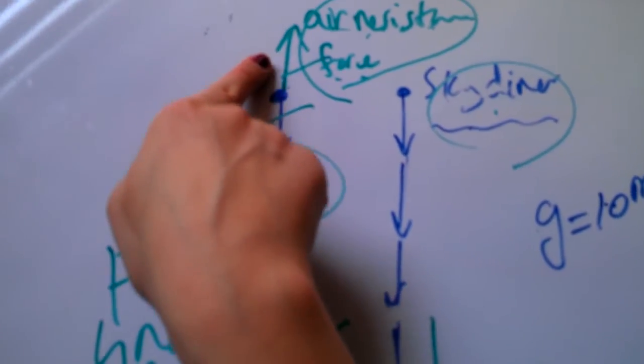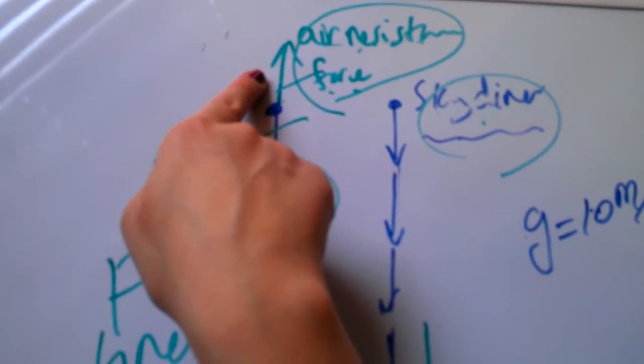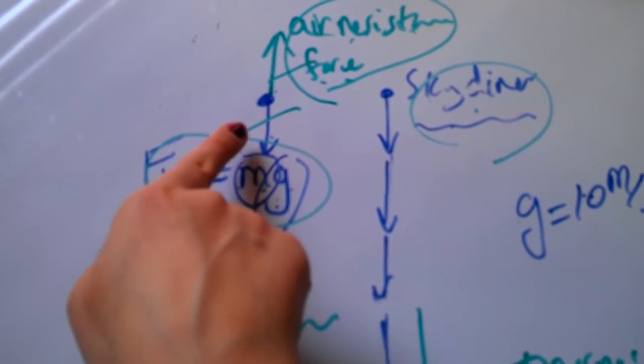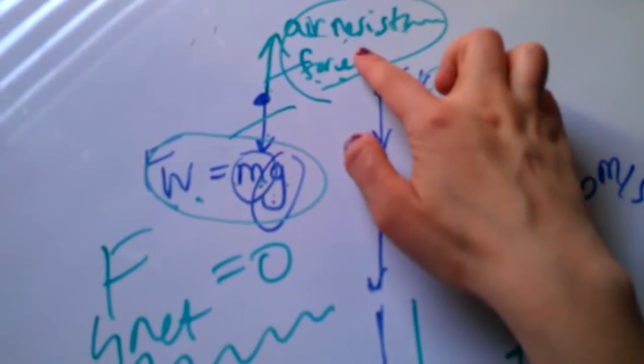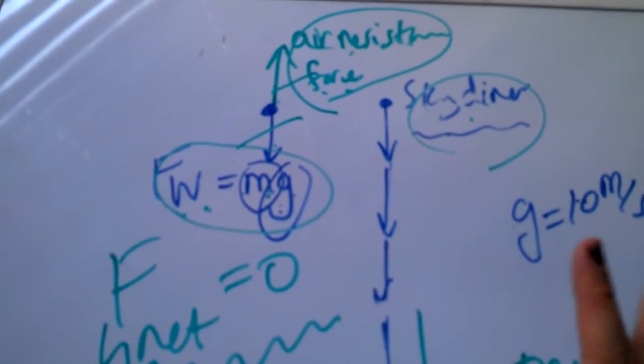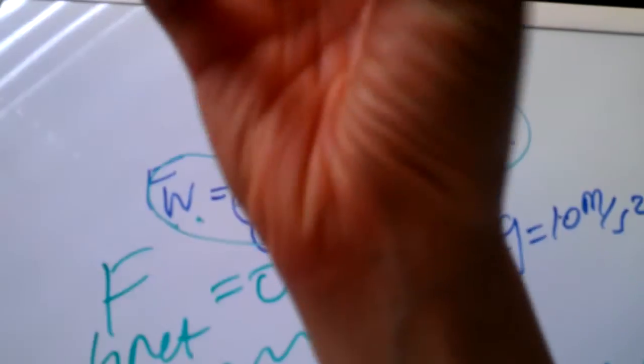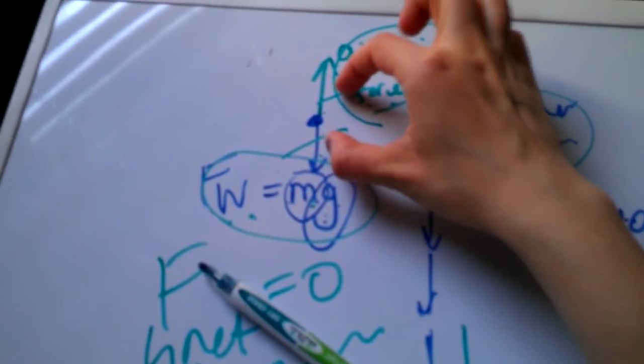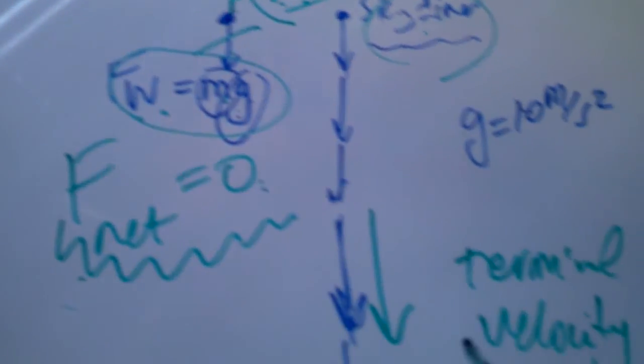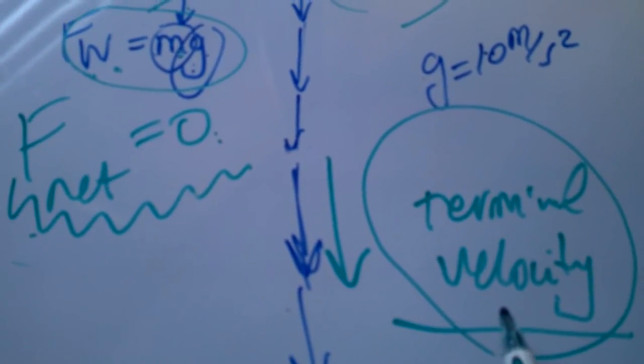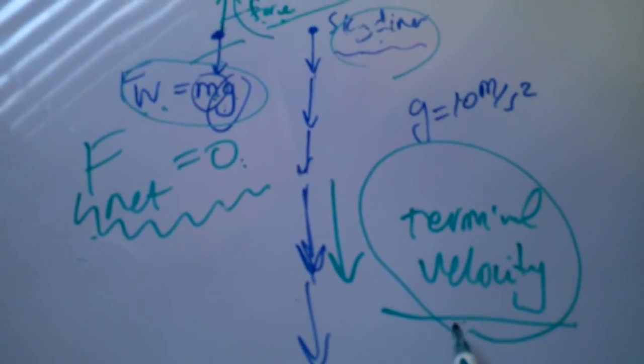At some point it grows such that it actually becomes equal to the weight. And we know air resistance acts opposite to the motion. If it's falling down, air resistance is upward. Then at the point where these two cancel each other out, F net turns out to be zero, at which our object goes with constant velocity. We call it terminal velocity.